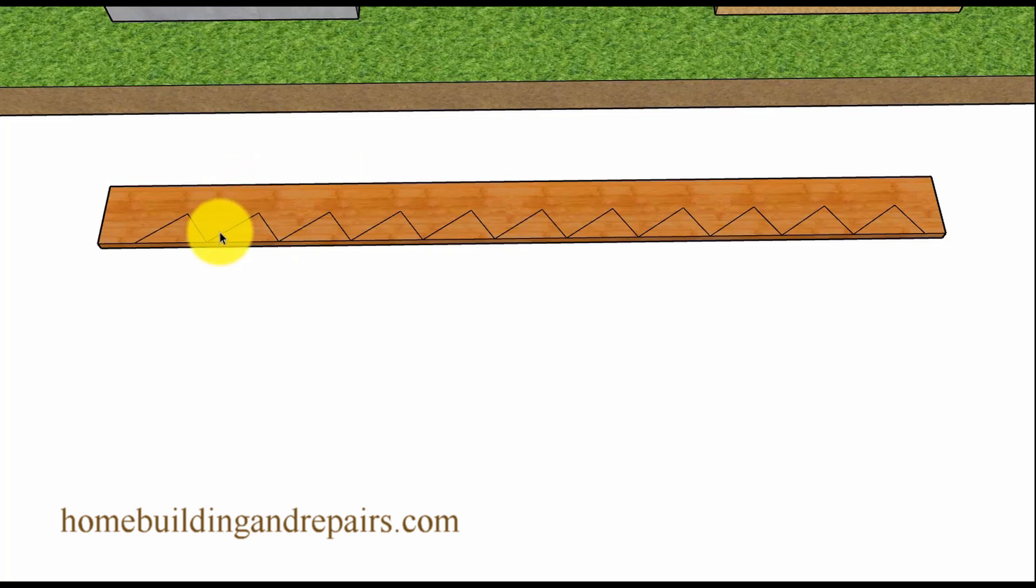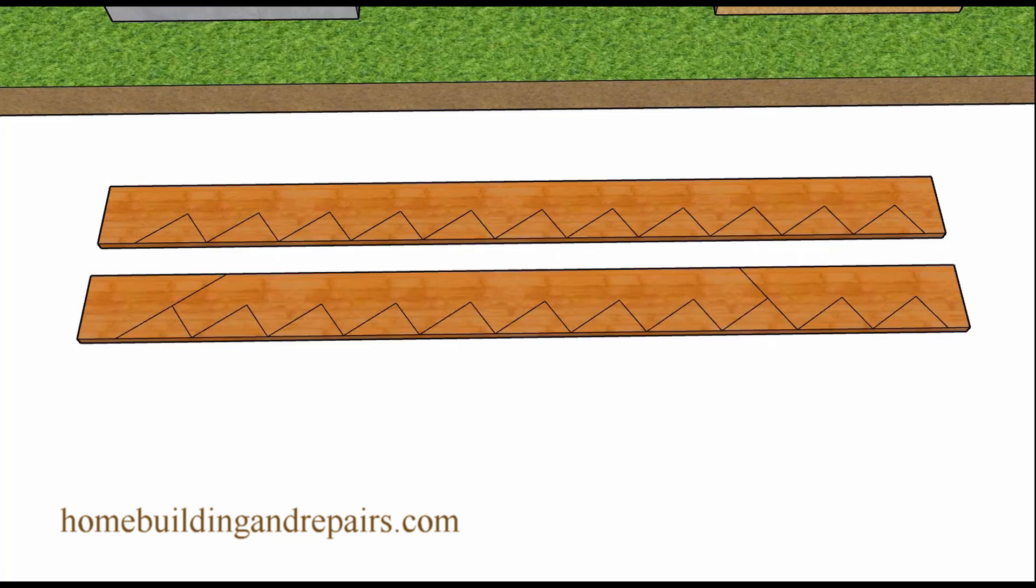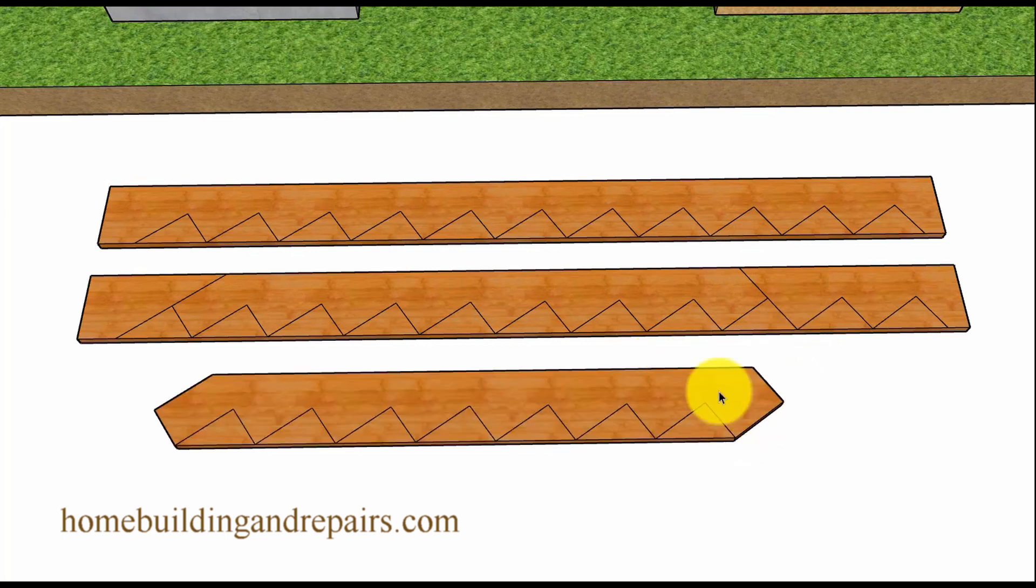Instead of laying out the stringer and cutting the bottoms and the tops, what I would suggest would be to lay out the stringer and then just simply put a line where you want the bottom to be and a line at the top here and cut a stringer. But don't cut the notches out for the steps.